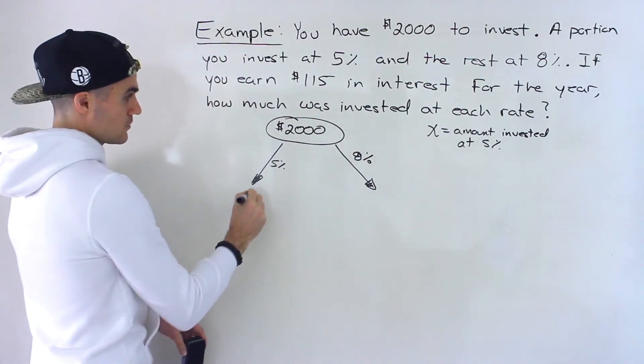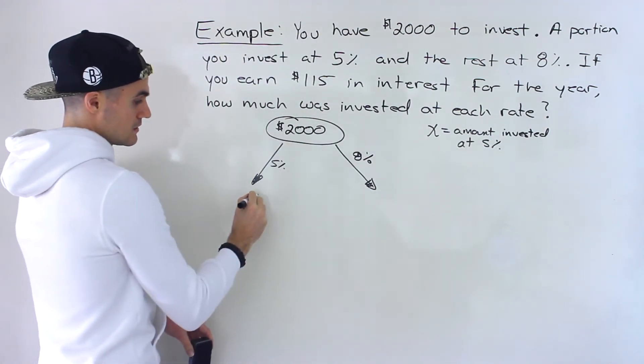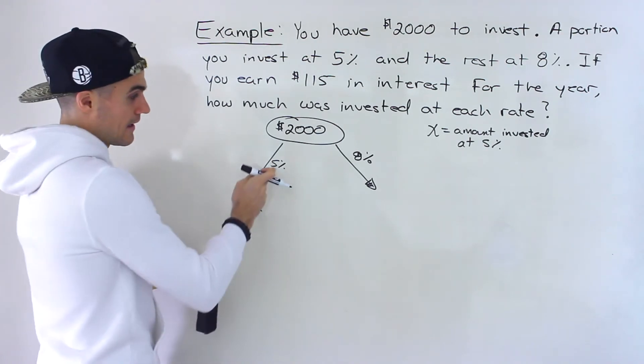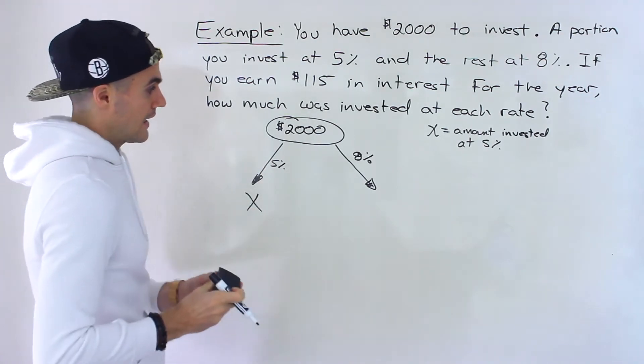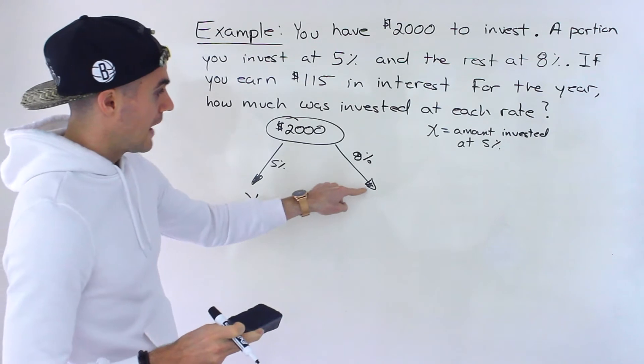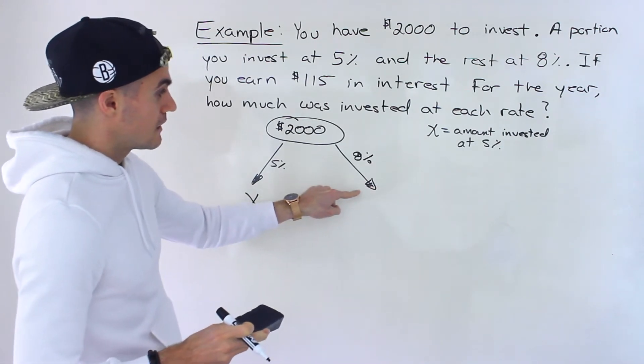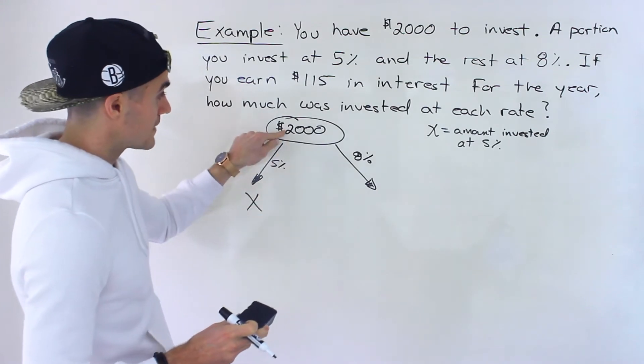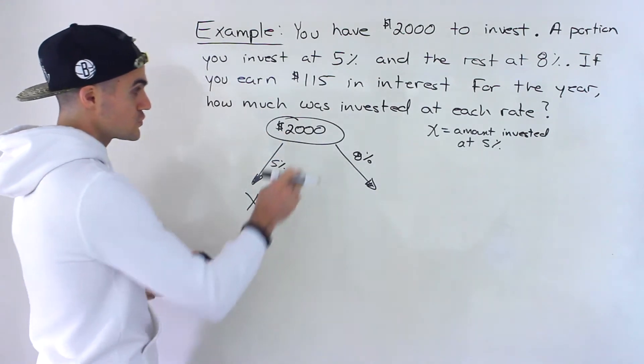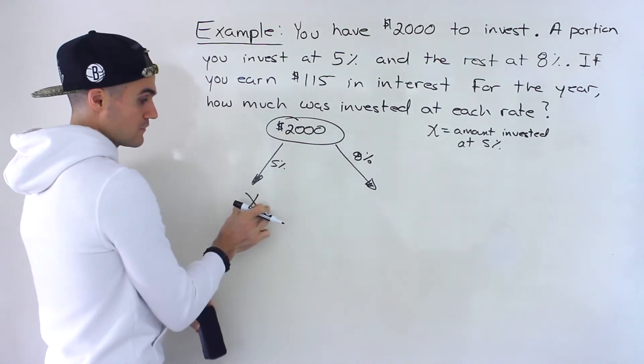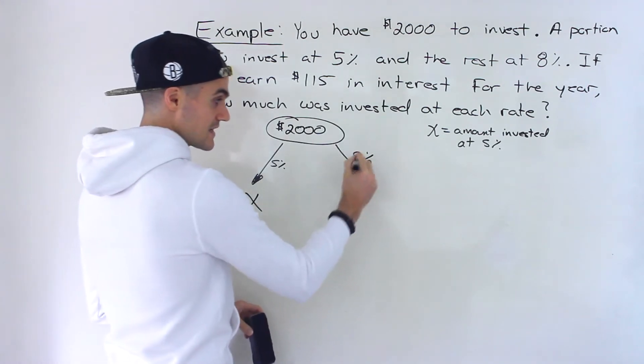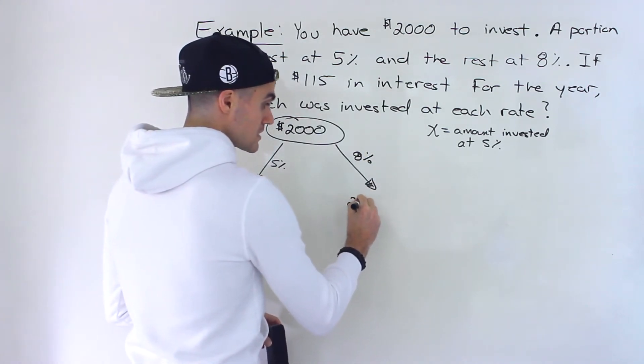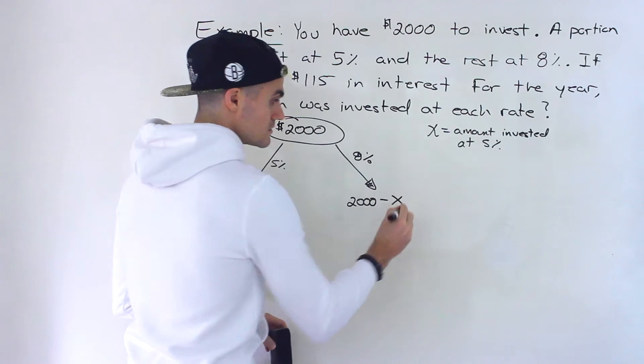So from this $2,000, we're going to invest X dollars at 5%. And so what does that mean? How much are we going to invest in the 8%? Well, we're going to invest the rest of the $2,000. So if $2,000 from that, if we invest at X, what's left to invest in the 8% is $2,000 minus X.